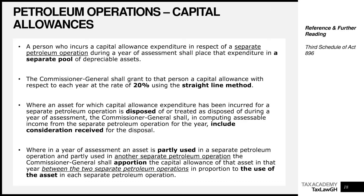Where an asset for which capital allowance expenditure has been incurred for a separate petroleum operation is disposed of or treated as disposed of during the year of assessment, the Commissioner General shall, in computing assessable income from the separate petroleum operation for the year, include the consideration received for the disposal. I want you to remember this — when we get to mining, you'll realize a big difference here.